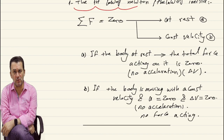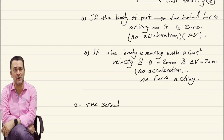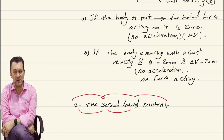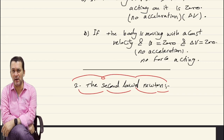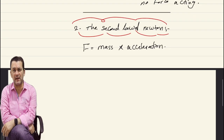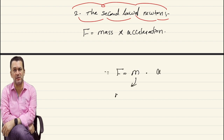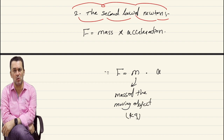That was the first law of Newton. When it comes to the second law of Newton, we say the force acting on any body equals the mass of that body times its acceleration. Keep in mind: acceleration is change in velocity over time. We can write this in symbols: F (capital, meaning force) equals m (mass of the body) times a (acceleration, in lower case).